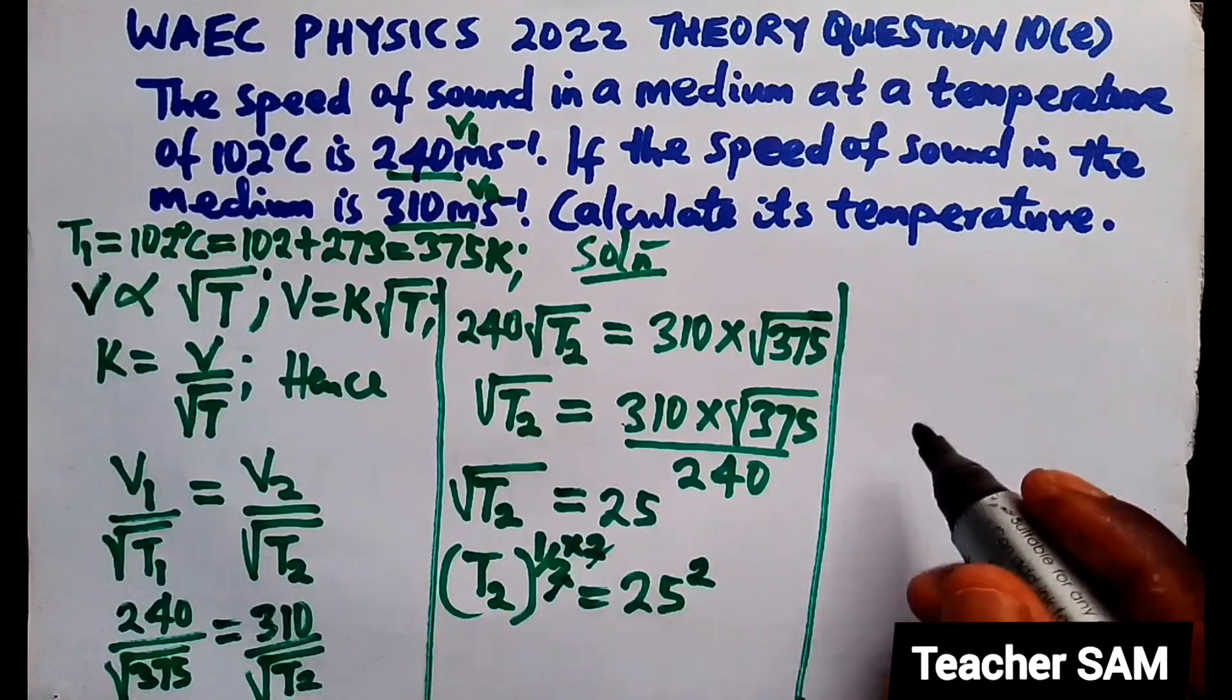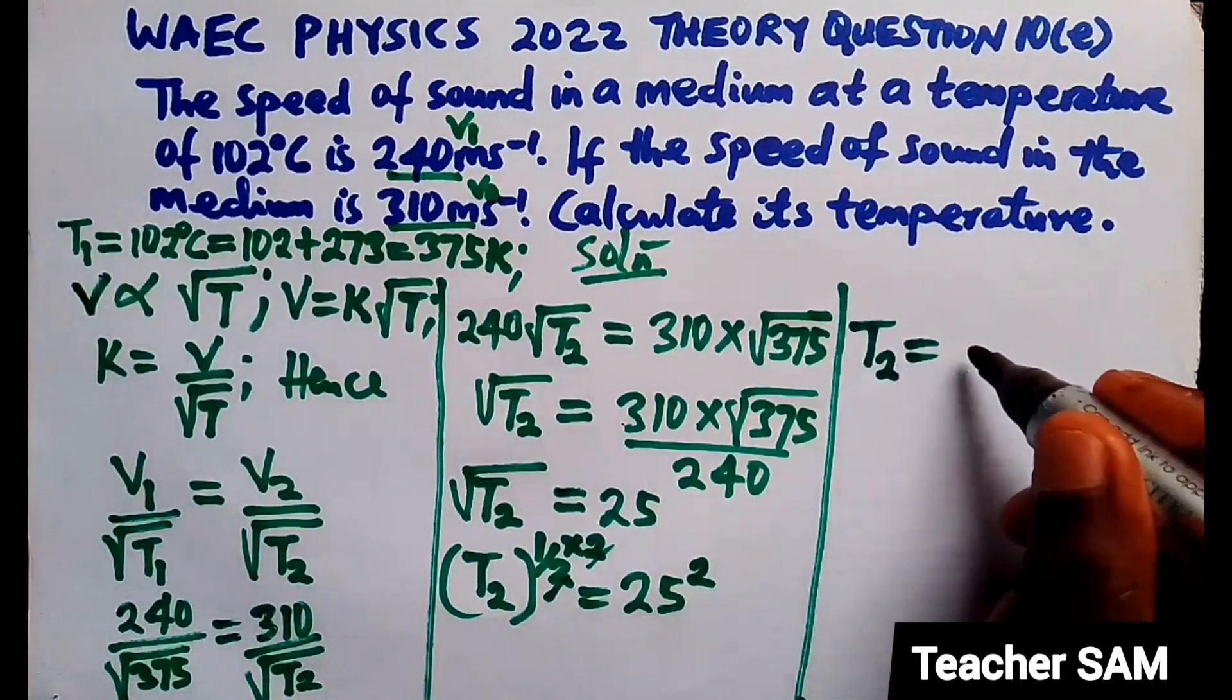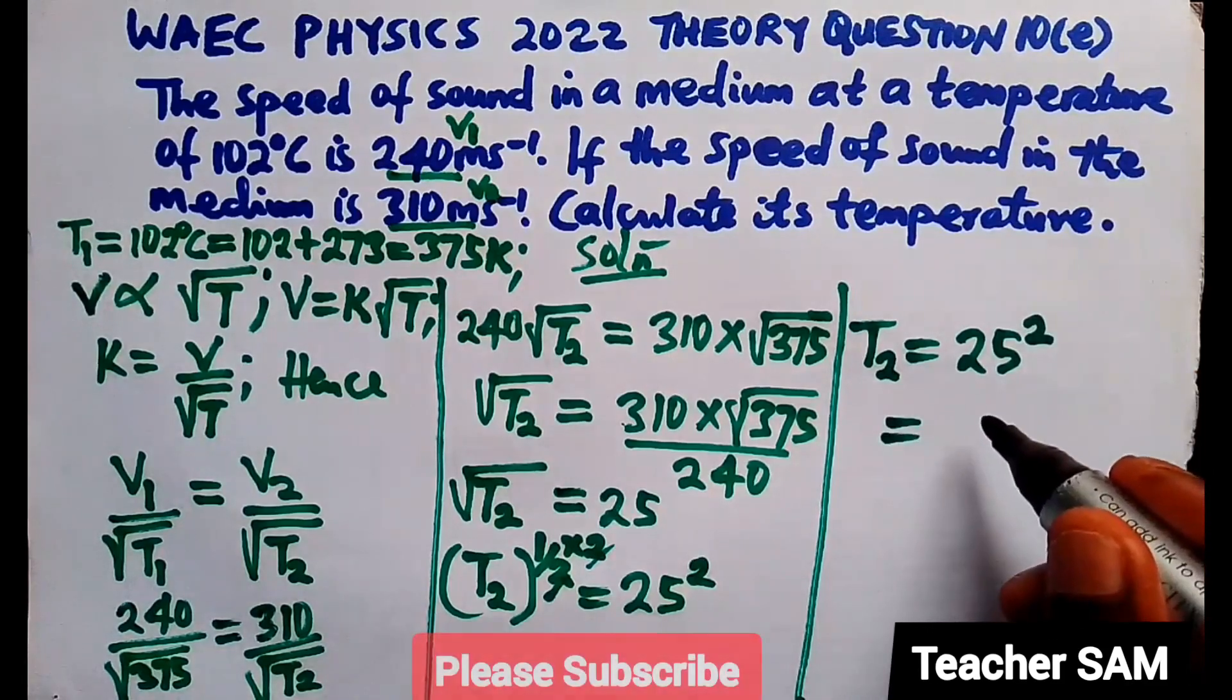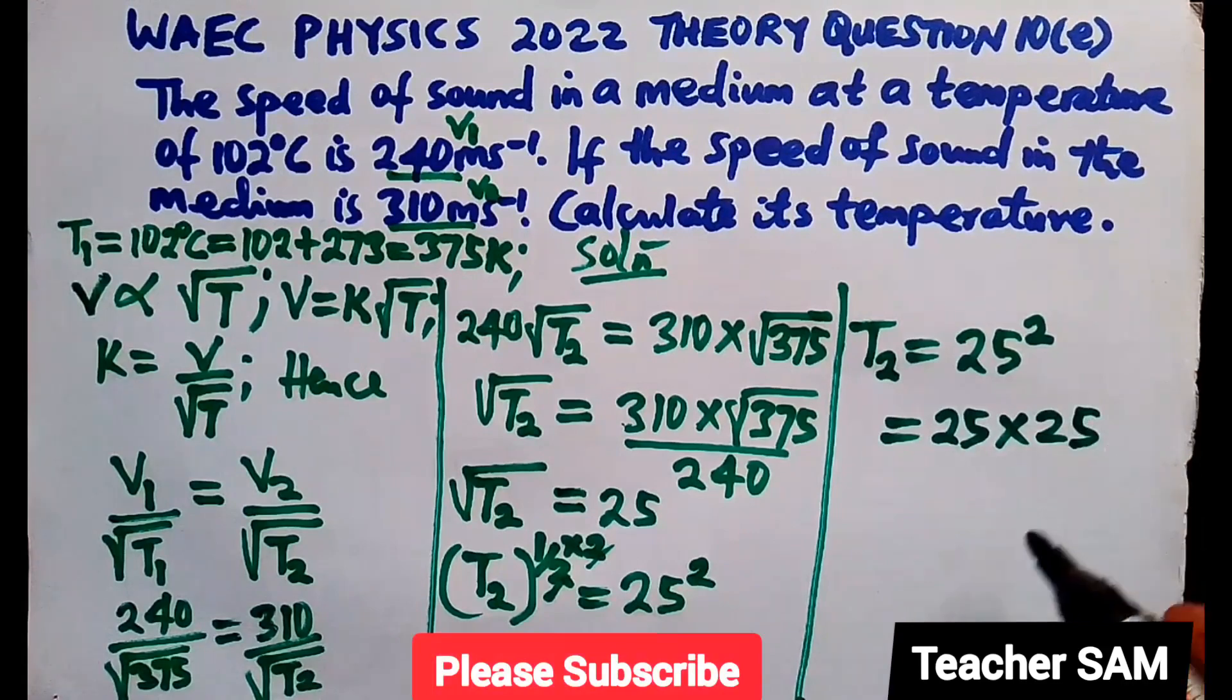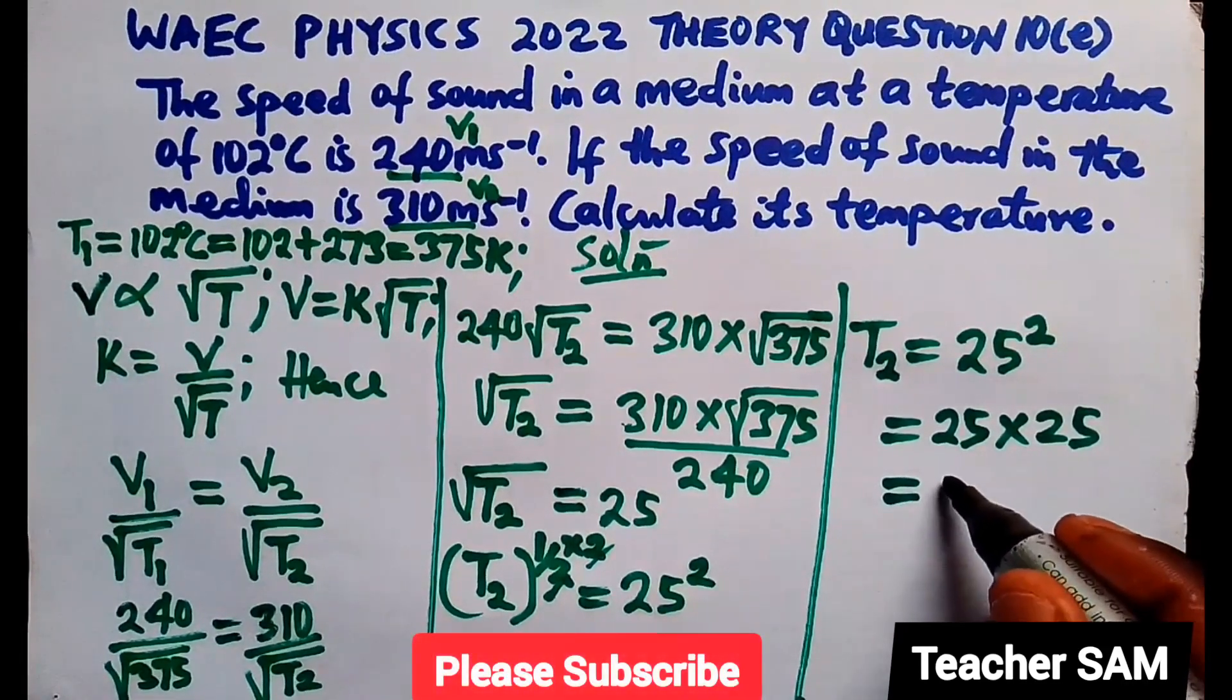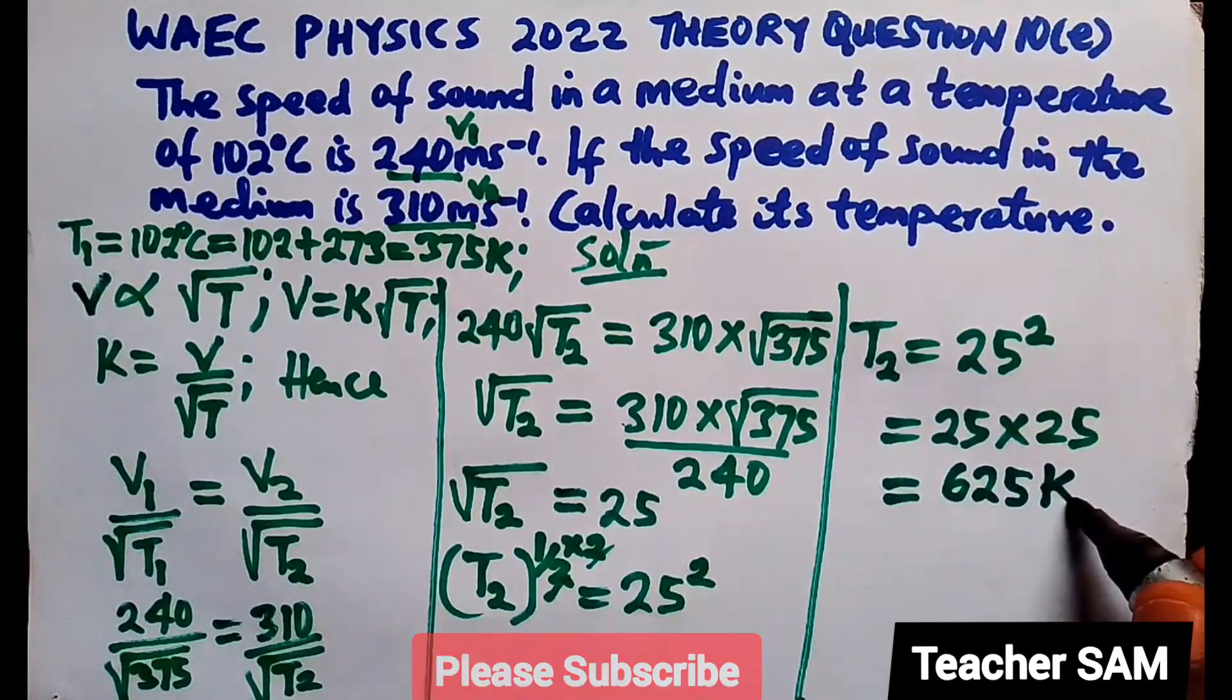So, we'll be left with our T2 to be equals to 25 square. And we know that 25 square is 25 times 25. 25 times 25. And 25 times 25 is 625. Remember, this is in Kelvin.